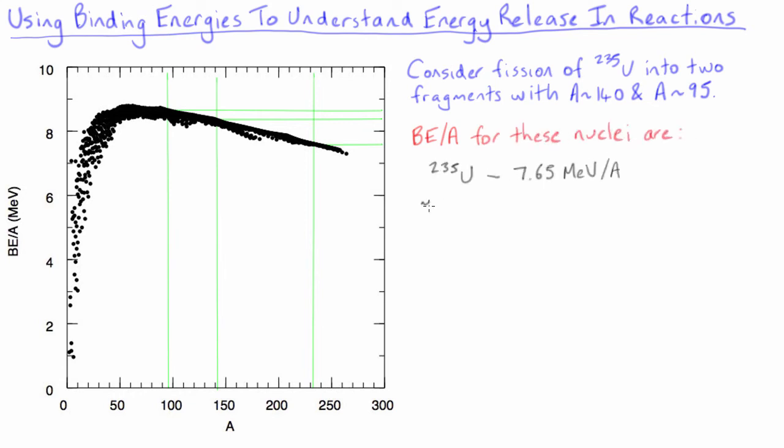We end up getting the values listed here, and hence we can estimate the energy released in the fission of uranium-235 by looking at the difference in the binding energies.